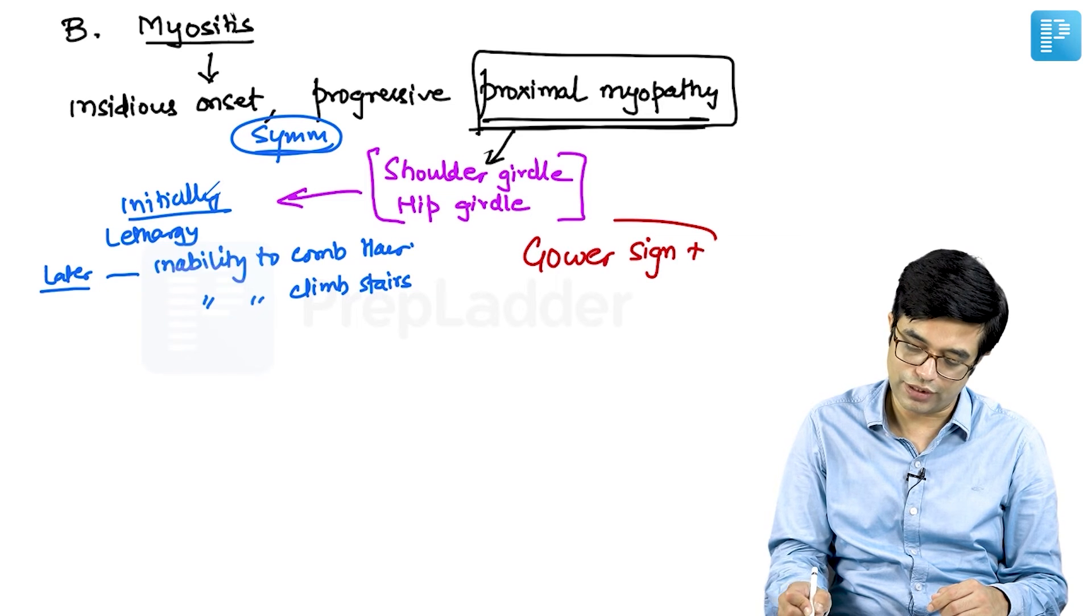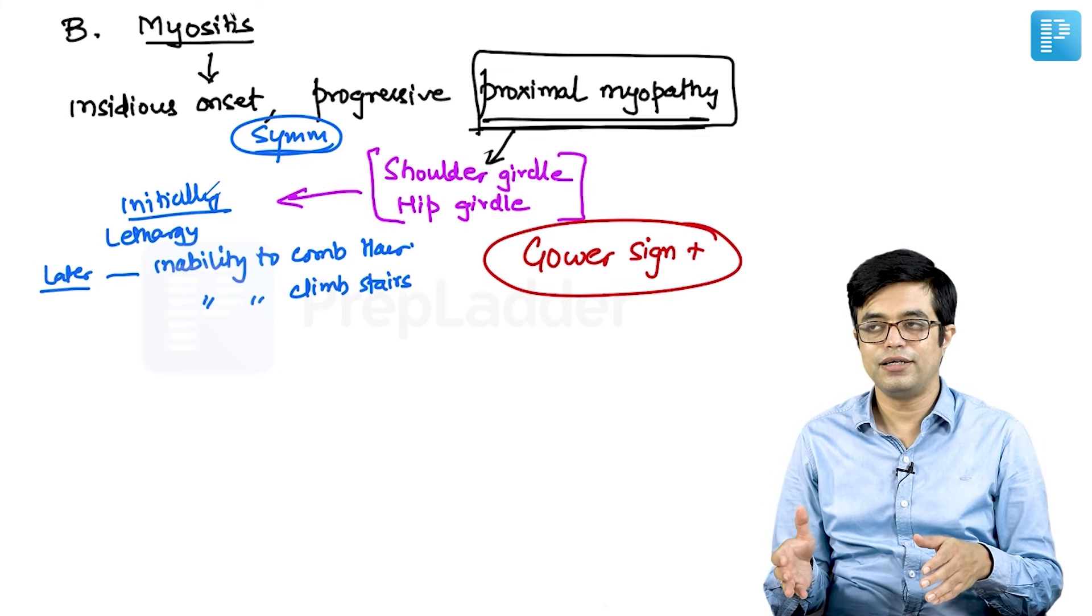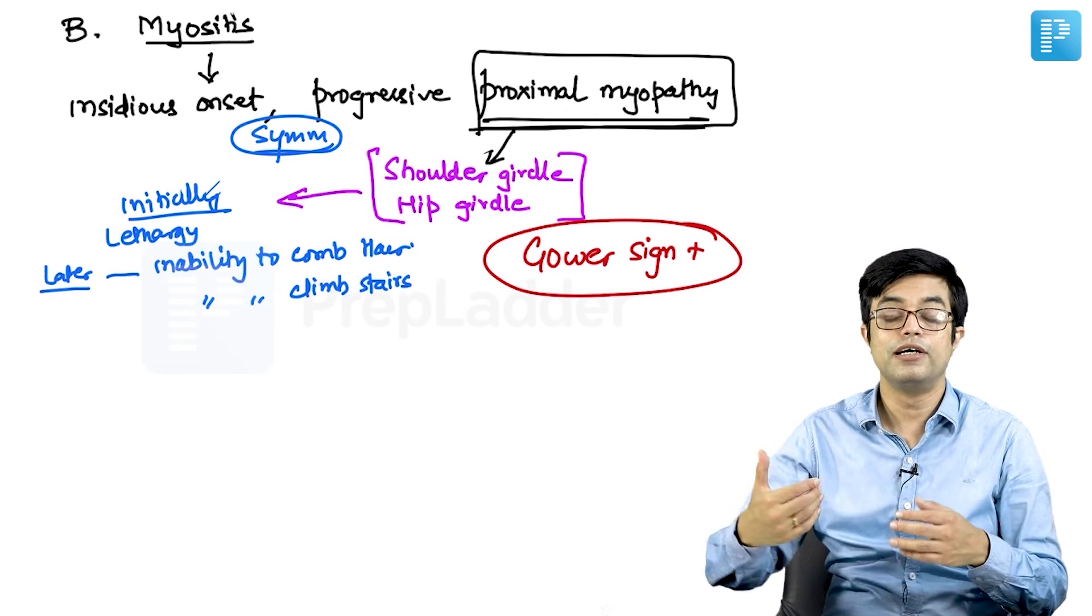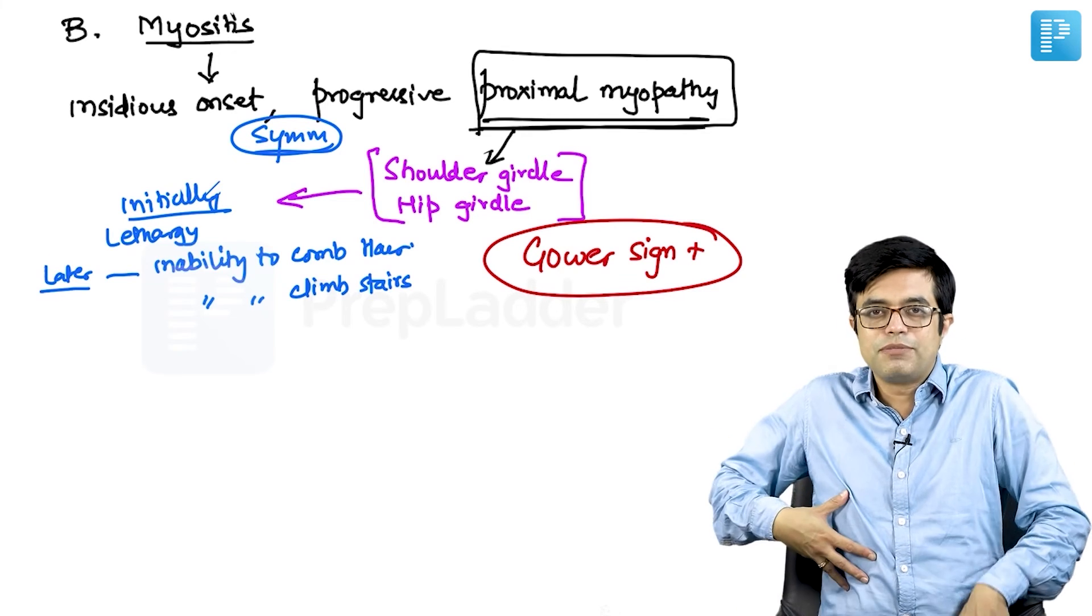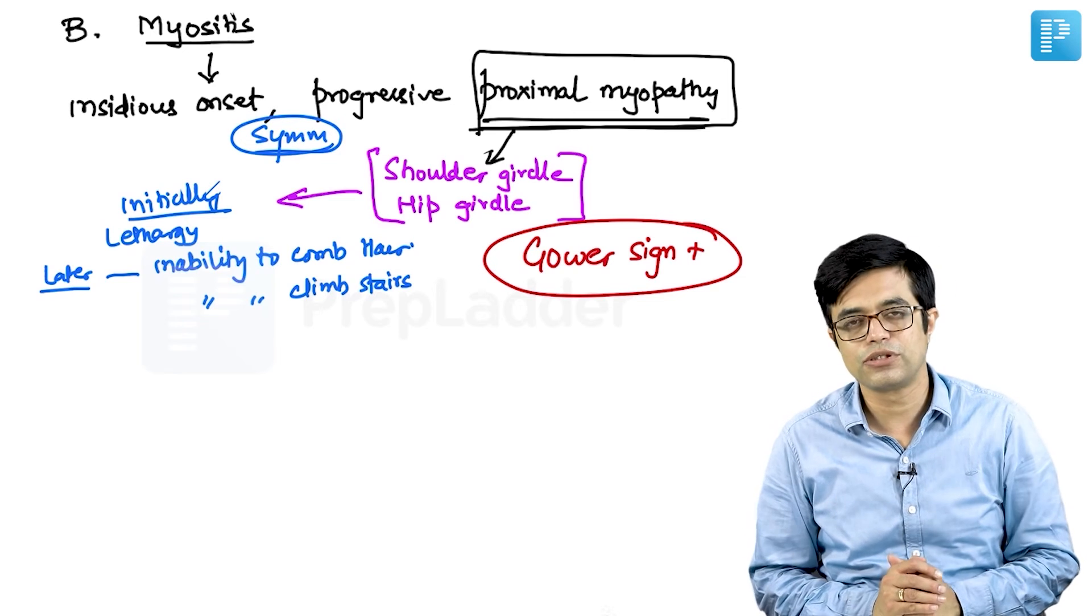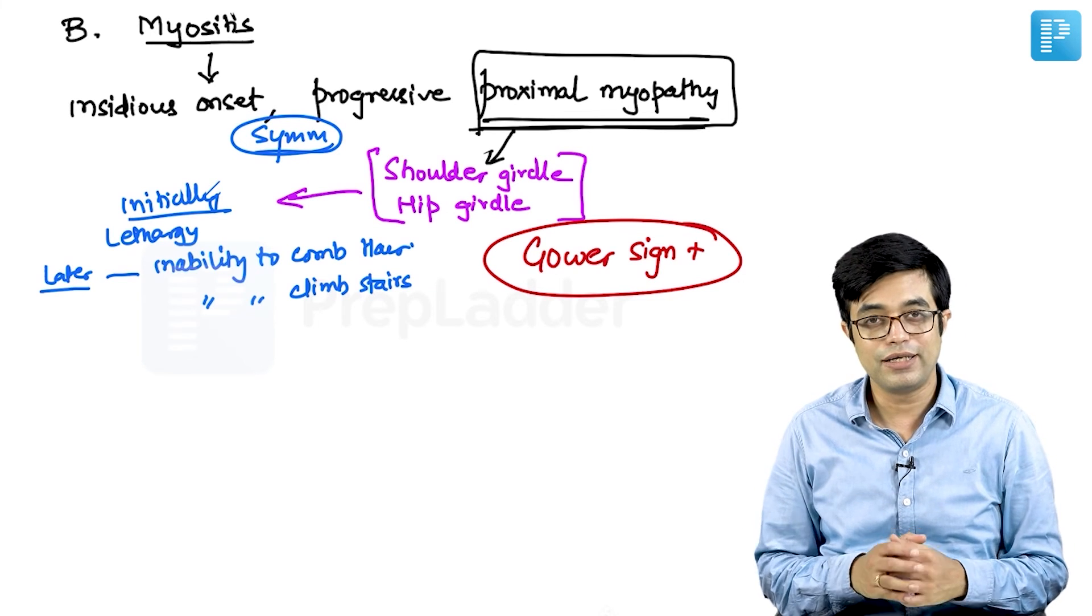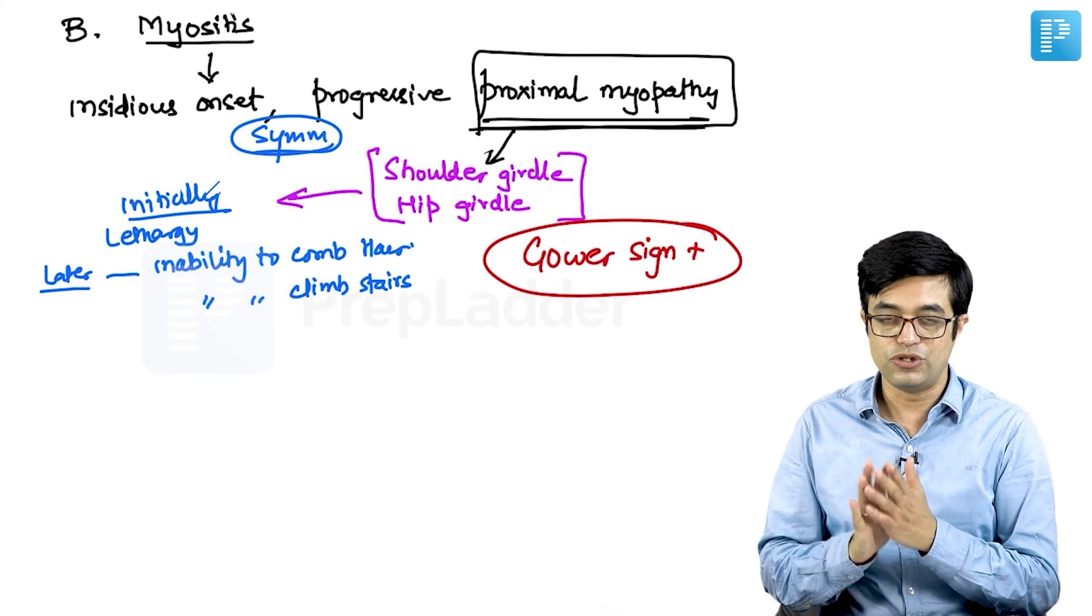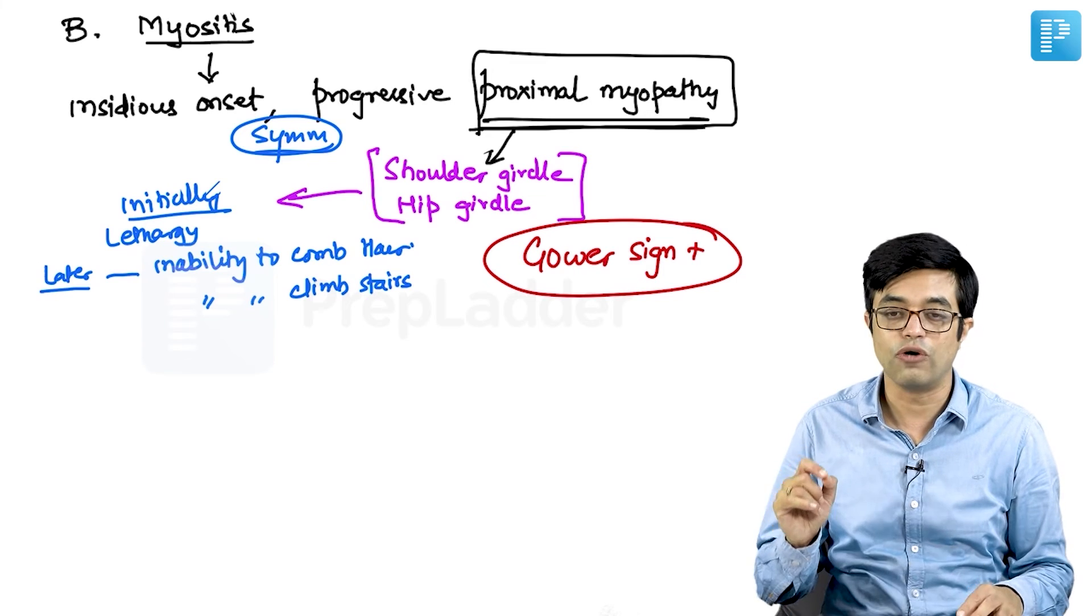Gower sign is something you have read already multiple times. Gower sign is a sign in which the child is unable to get up from lying down or sitting position to standing position without climbing upon his body. In Gower sign, the child climbs upon his body or takes abnormal postures to stand up. Gower sign was originally described in Duchenne's muscular dystrophy, but it is now known that it can occur in any proximal muscle weakness and juvenile dermatomyositis is also one of the differential diagnosis for Gower sign.